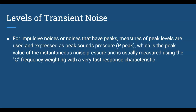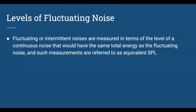For impulsive noises or noises that have peak values, measurement is usually done using the C frequency weighting with a very fast response. We'll talk about slow versus fast response and the different types of weightings in this PowerPoint. Fluctuating or intermittent noises are measured in terms of a continuous noise level that would have the same total energy as the fluctuating noise — often referred to as the equivalent sound pressure level.